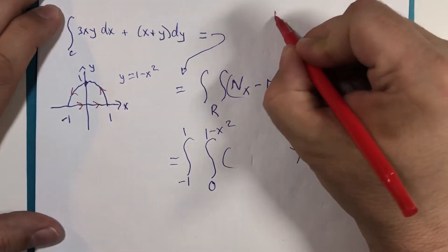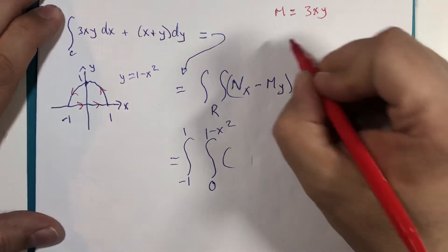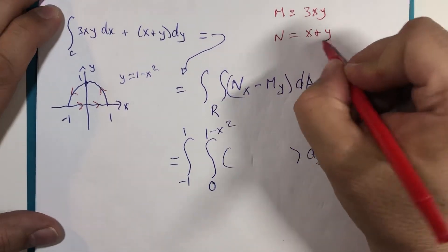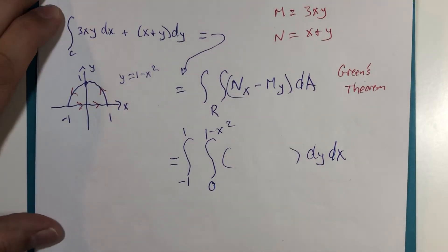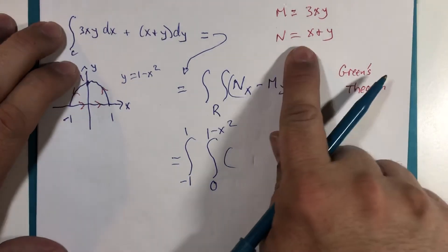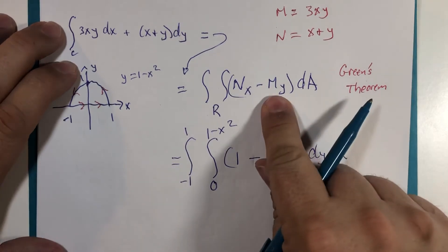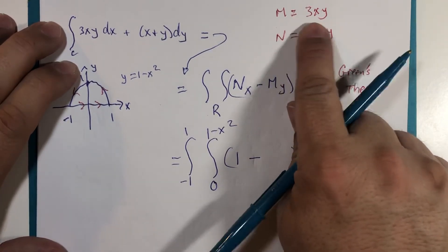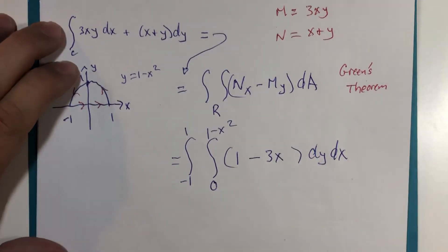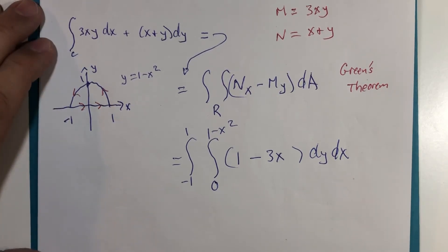In this problem here, m is equal to 3 times x times y, and n is equal to x plus y. Well, n with respect to x is 1 minus m with respect to y. That's right, the y derivative of this would be 3x. This is what I'm about to evaluate.